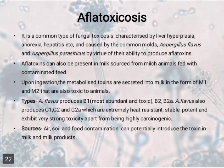The different types of aflatoxins are: Aspergillus flavus produces B1, B2, and B2A — among them B1 is the most abundant and most toxic. G1, G2, and G2A toxins are produced by Aspergillus flavus only. They are extremely stable, potent, and exhibit very strong toxicity, apart from being highly carcinogenic.